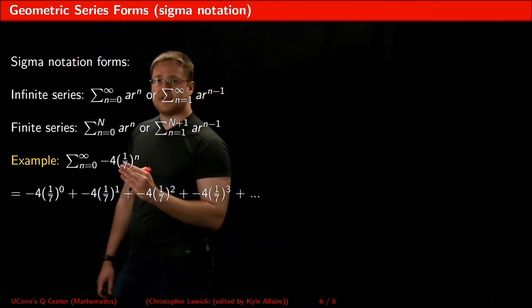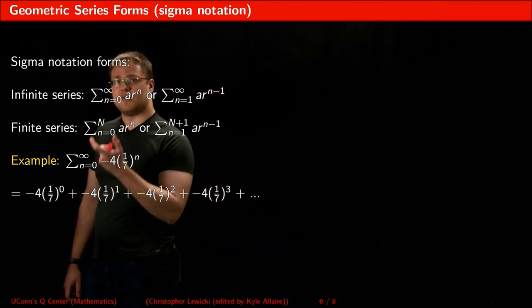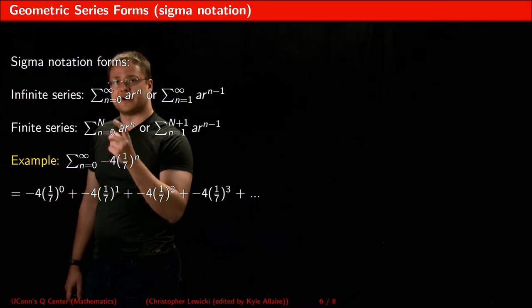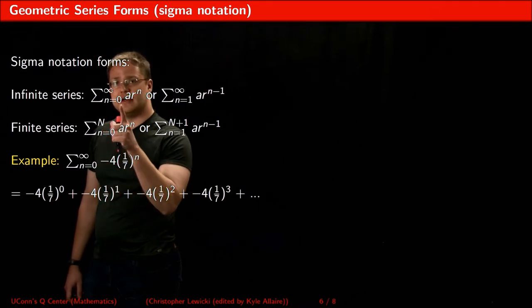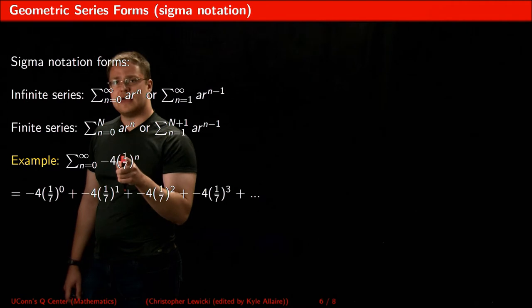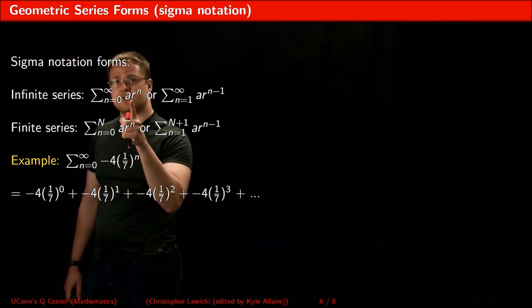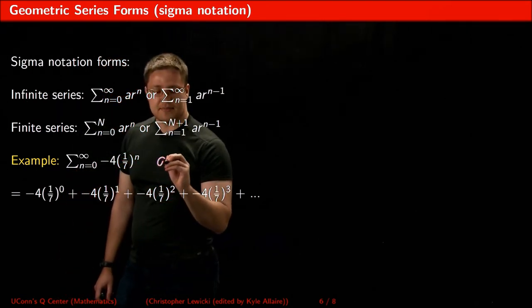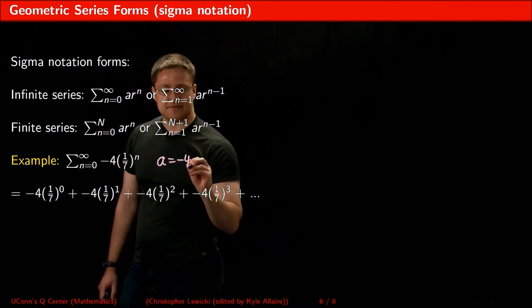If we look at this example here, notice that this form matches up with this form over here, where negative 4 is in the place of the A, and 1 over 7 is in place of the R. So I would say that my A is equal to negative 4,